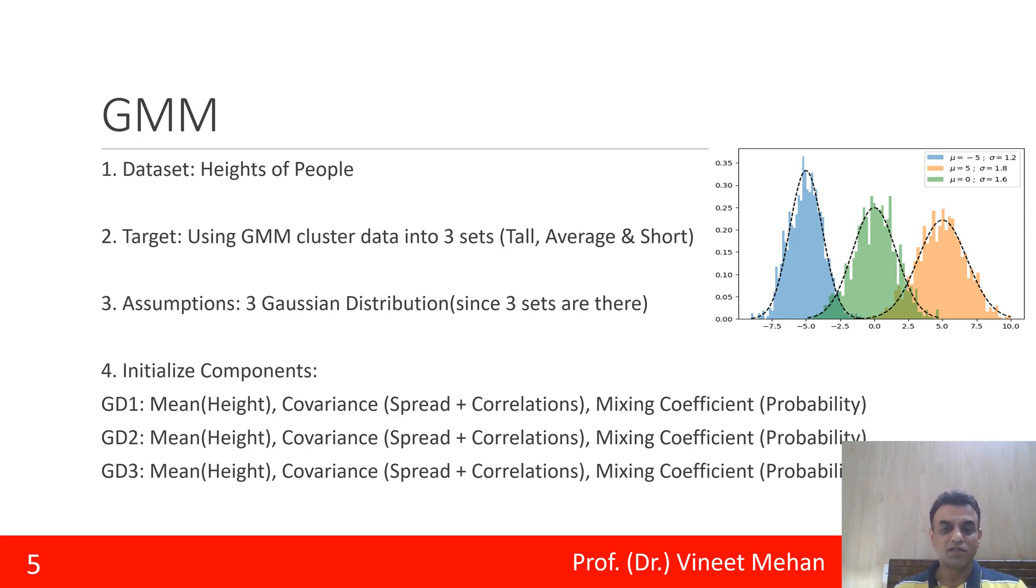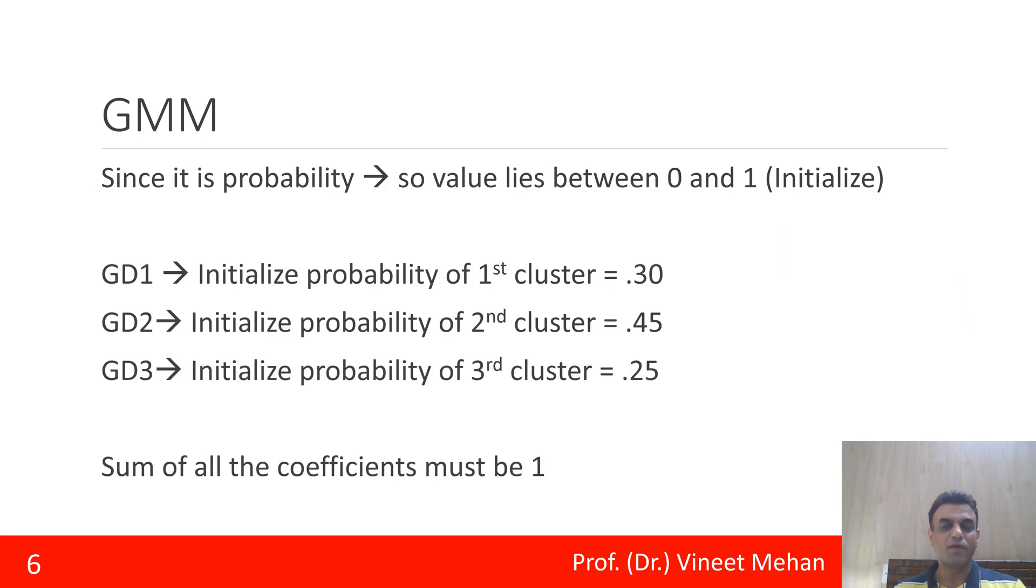Then the third component is the mixing coefficient. What mixing coefficients tell us? Mixing coefficient tells us the probability. What probability? So probability always lies between a value of 0 and 1. So we need to initialize this mixing coefficient.